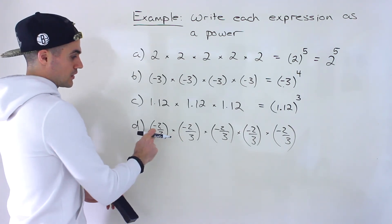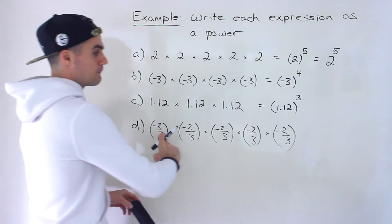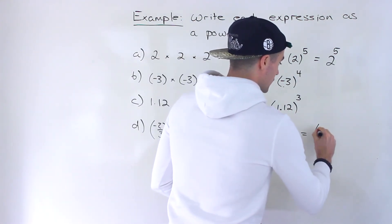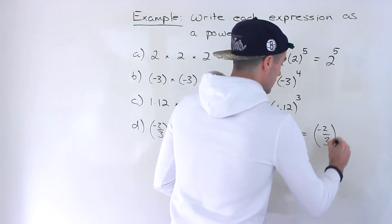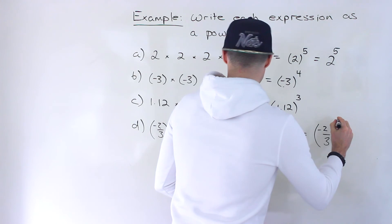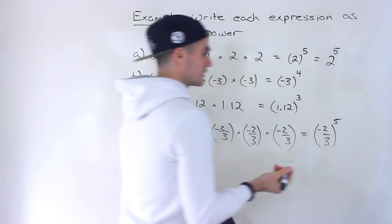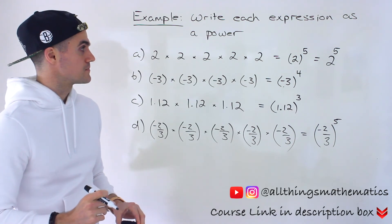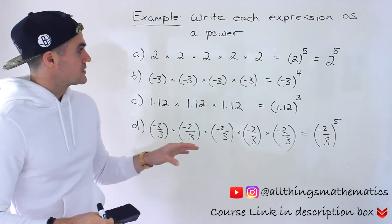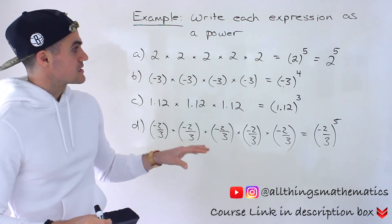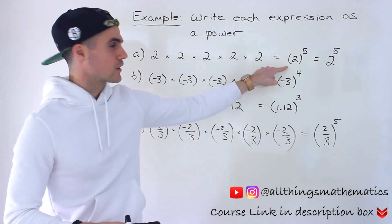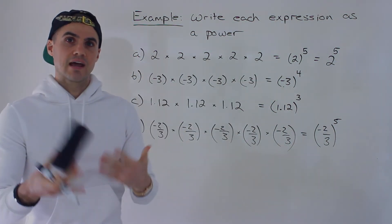And then over here we have negative 2 over 3 multiplied 5 times. In this case we'd have negative 2 over 3, putting the whole fraction in brackets, to the power of 5. So when you run into something like this, I highly recommend always using brackets, even if you're working with positive values, just to get into that habit.